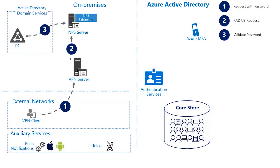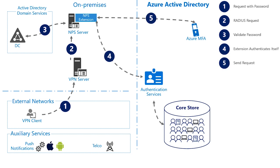How does the NPS server invoke the MFA challenge using the Azure MFA service in the cloud? When the NPS server administrator installed the Azure MFA NPS extension on the server, the process registered itself in the associated Azure Active Directory, which issued a certificate identifying the specific instance. When the Azure MFA extension goes to invoke Azure MFA, it authenticates to Azure Active Directory using that certificate to open a secure connection and send a request to invoke the default MFA authentication method for that user.